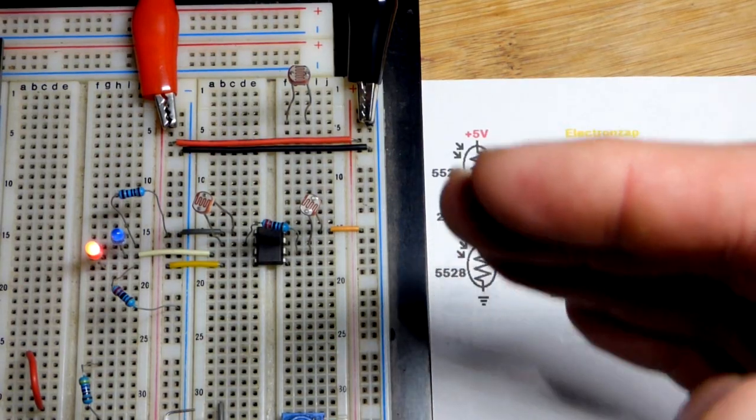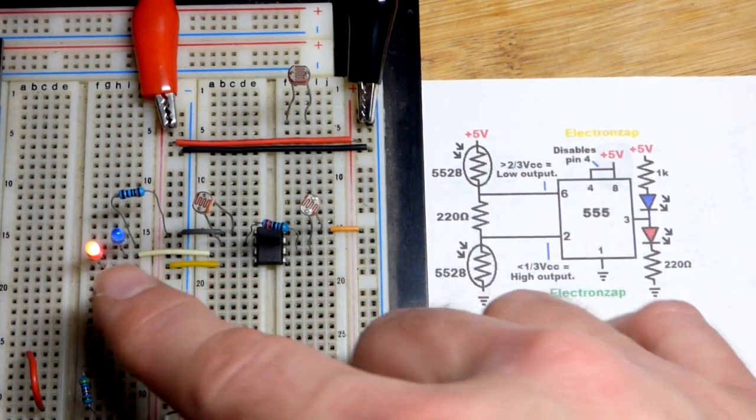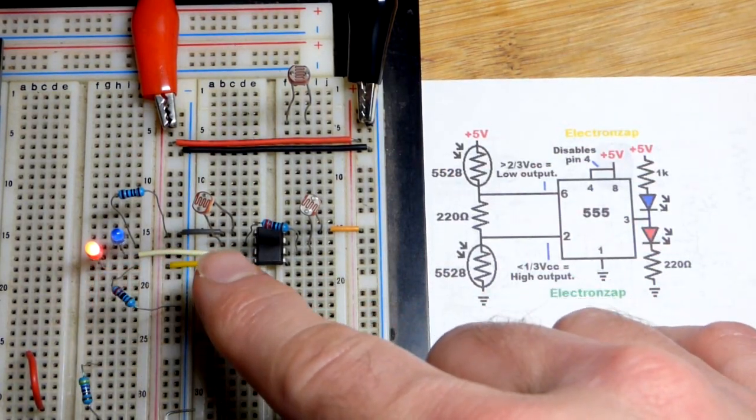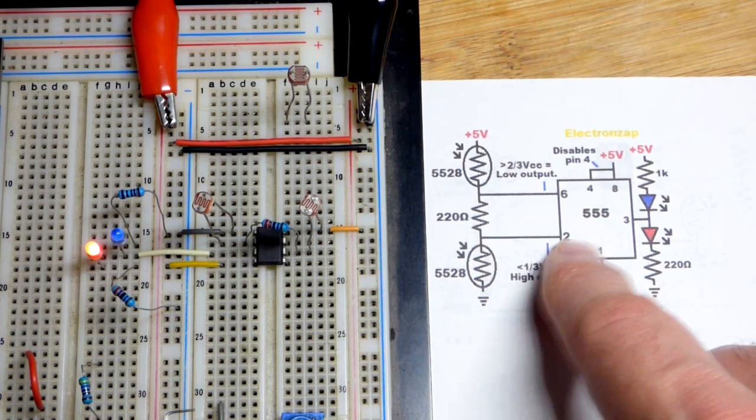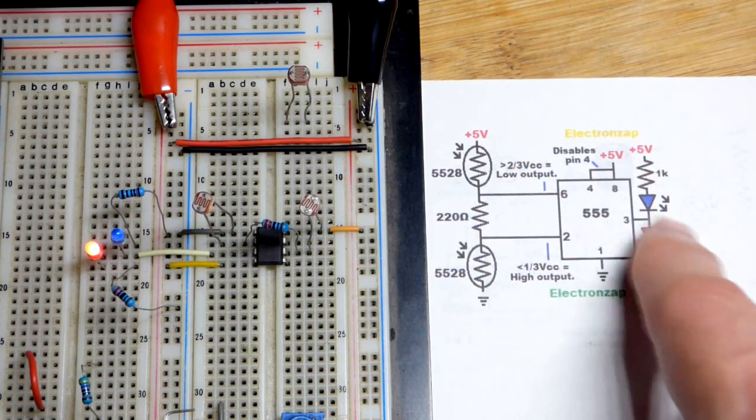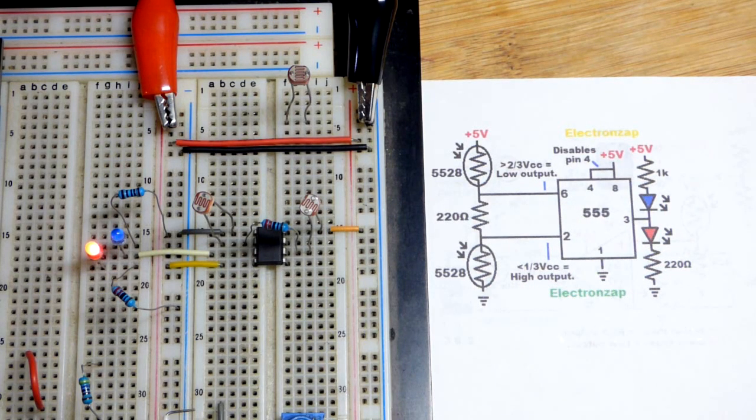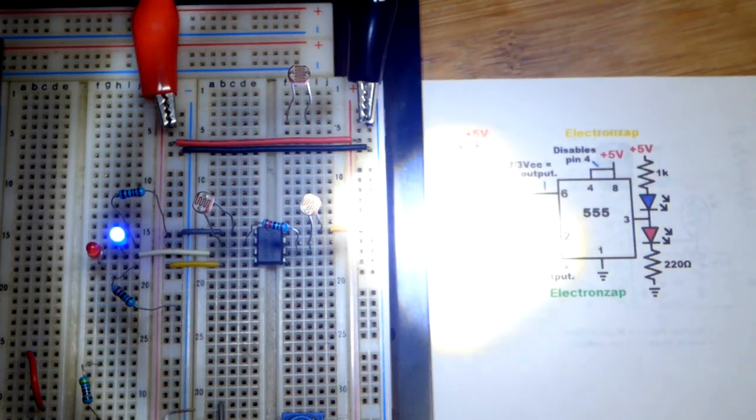Right now the output's high, which tells me that light dependent resistor right here to the trigger pin was brighter, because when that gets a low input it sets the output high. So I'm going to turn on my flashlight and watch the output.